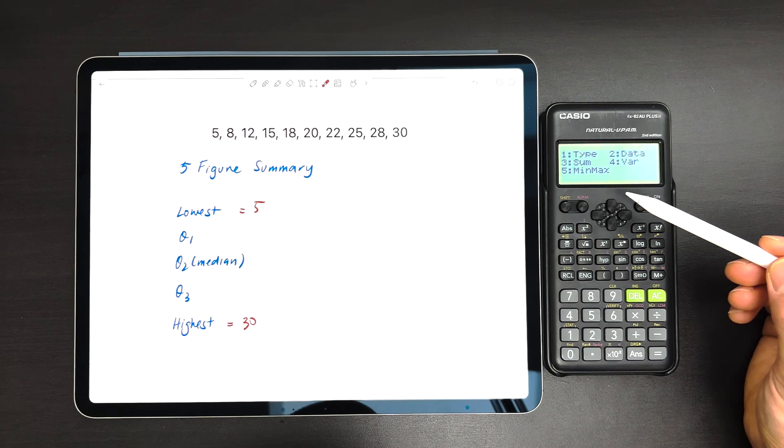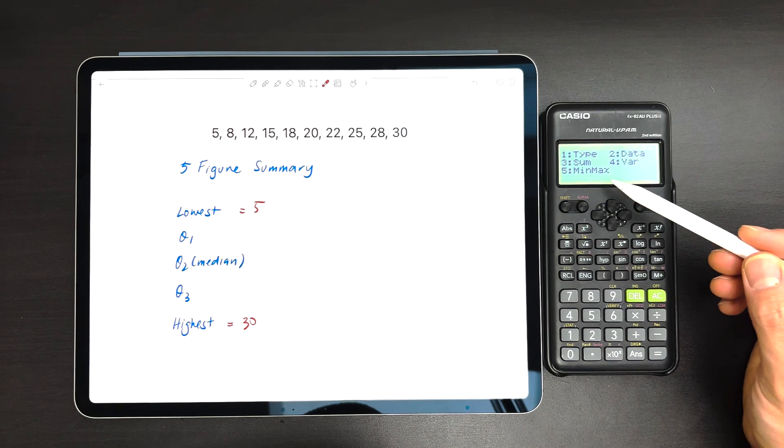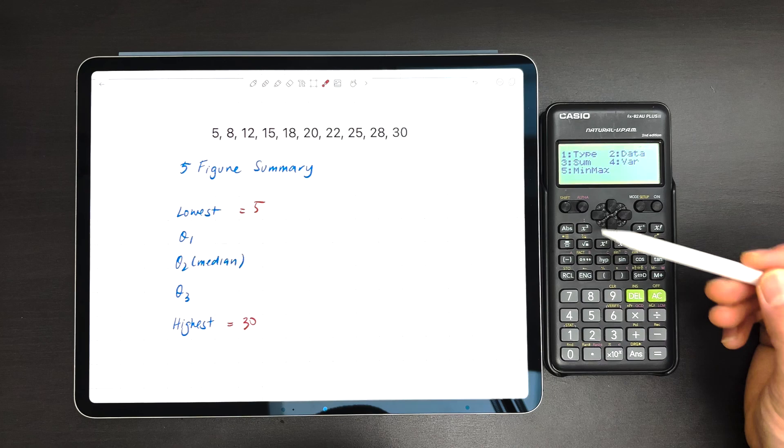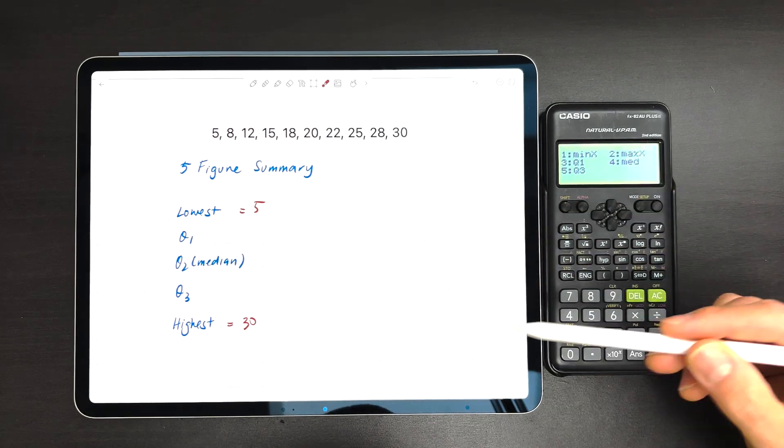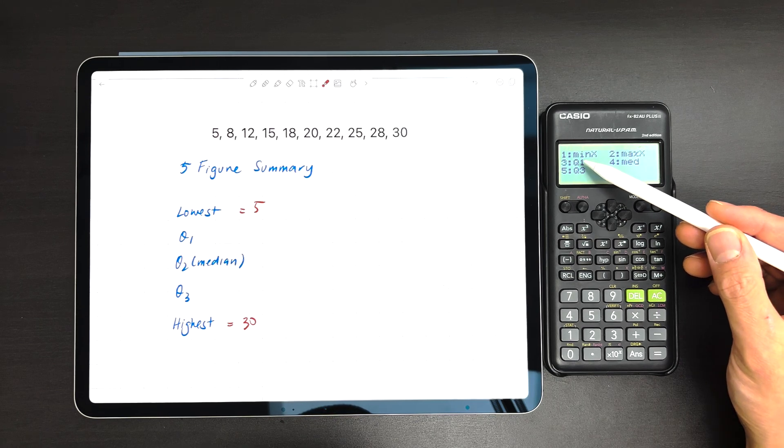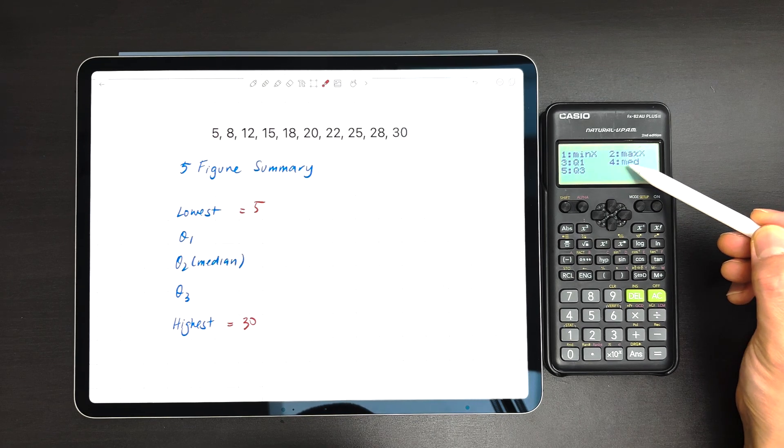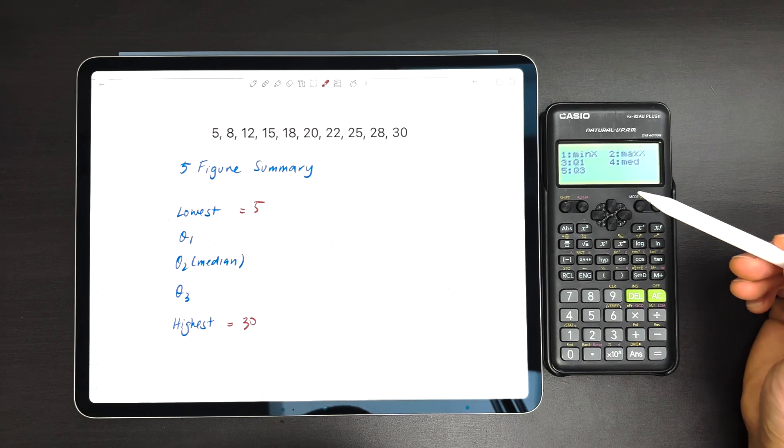Now, to get what we're looking for, we want to press Min Max—that's number 5. You'll see here we've got Min X, Max X, so that's 5 and 30, which we just did by hand. But here you've got Q1, Q2 or the median (number 4), and then Q3 (number 5).